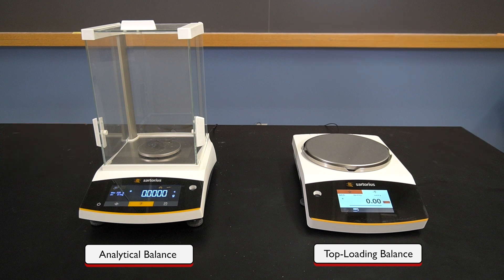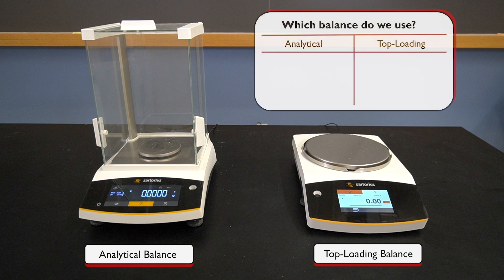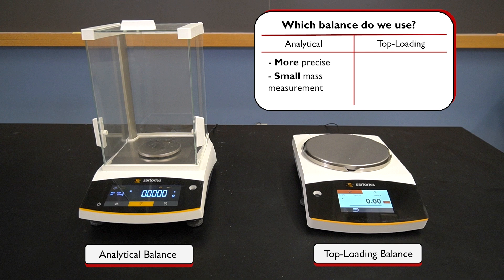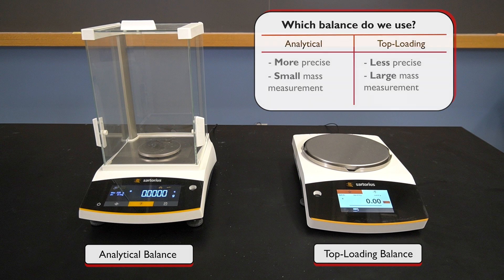To choose which balance to use, we should consider how precise we need the measurement to be. If a high degree of precision is required, such as in the case of preparing a standardized solution from a small mass, then we should choose the analytical balance. However, if precision is less critical, either because we only need an approximate amount of something, or because we are using a large amount that can be measured accurately with less precision, then a top-loading balance should be used.